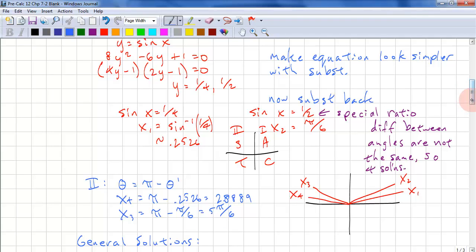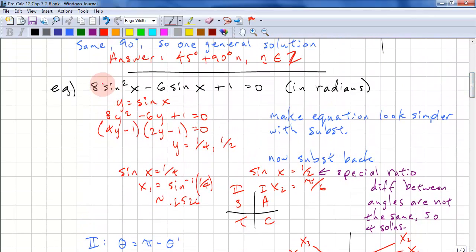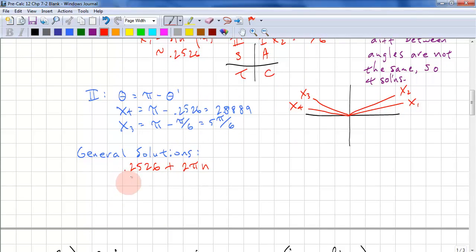Since we're not given an interval, we need to give a general solution. So we have 0.2526 plus 2 pi n. Recall that our b is 1. We have no constant here, so it's implied that it's 1. And we have pi over 6 plus 2 pi n. We have 5 pi over 6 plus 2 pi n. And we have 2.8889 plus 2 pi n and n from the set of integers. And note it's customary to put in increasing order.